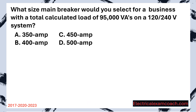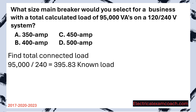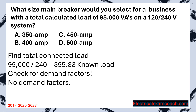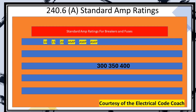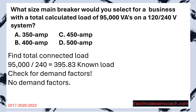What size main breaker would you select for a business with a total calculated load of 95,000 VAs on a 120/240 volt system? Step one: find our total connected load. They've already performed the load calculation for us, so all we have to do is divide by the system voltage — we end up with 395.83 and we would round up to 396. Whether it's a home or a business, all the demand factors were already performed to get that original 95,000 number, so there are no more demand factors. We head to Table 240.6A and choose the next standard size — a 400 amp breaker, which would also be a 400 amp service.